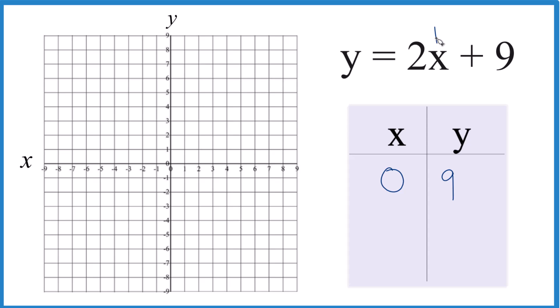but 2 times 1 is 2, 2 plus 9 is 11, and that doesn't fit. So I'm going to go with negative 1. 2 times negative 1, that's negative 2. Negative 2 plus 9, that would give me 7. That'll fit.